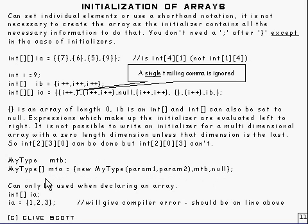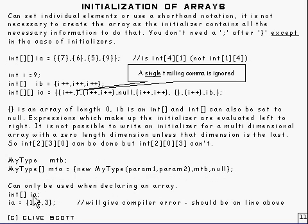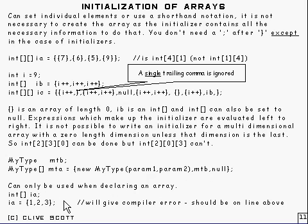You can only use this initializer form when declaring an array. You can't use it if you've already declared it and are then trying to assign an initializer — that will give a compilation error. But there is a way around this, which I'll show in just a second.